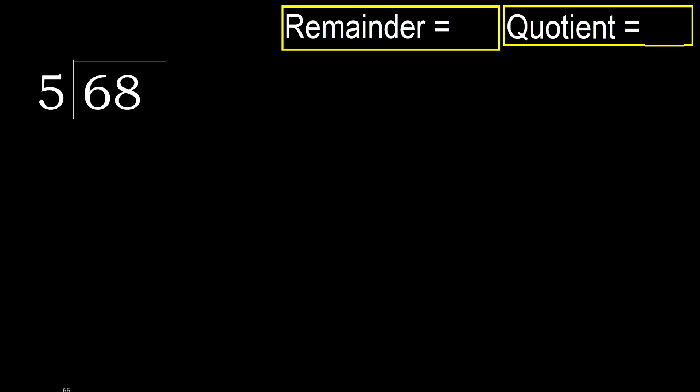68 divided by 5. 6 is not less, therefore with 6. 5 multiplied by which number is nearest to 6 but not greater.